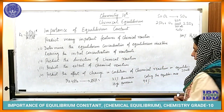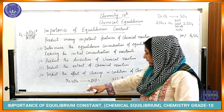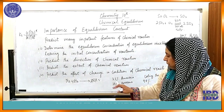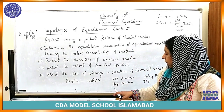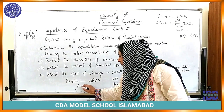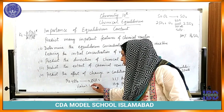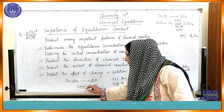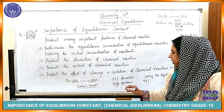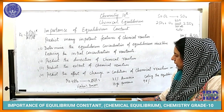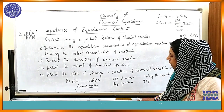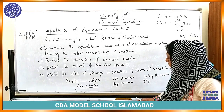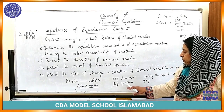For example, consider the equation where nitrogen and hydrogen react to form ammonia. This process is called the Haber's Process. It was named after the scientist who first created ammonia using this method, so it is called the Haber's Process.